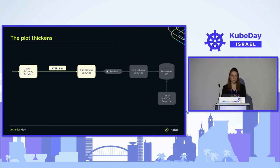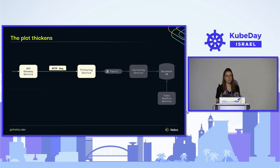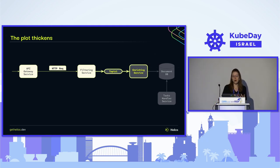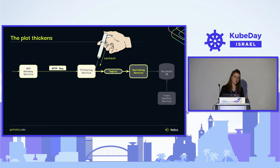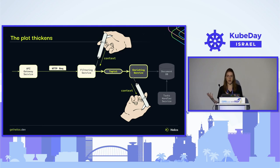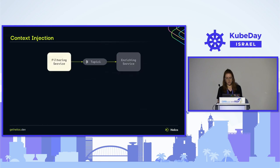OpenTelemetry exposes an API that we as developers can use to allow context propagation manually. What we need to do is inject the context before sending the message, and then extract the context before reading it and apply it to the rest of the code.